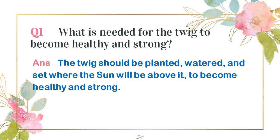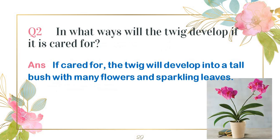A twig ko — a branch ko healthy and strong hone ke liye kia chahiye? The twig should be planted, watered, and set where the sun will be above it to become healthy and strong. Twig ko plant karte hain, us ko paani lagate hain, us ko obviously water dena hoga properly, and us ko us area mein lagana hoga jahan sunlight us tak pohonch rahi ho — tab hi twig strong aur healthy hoga.